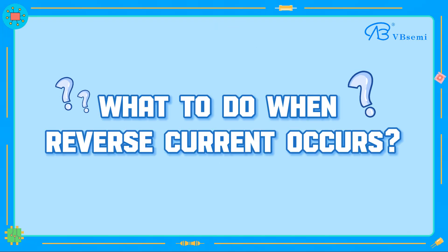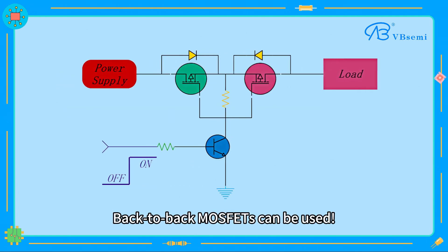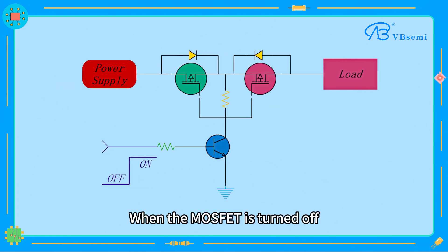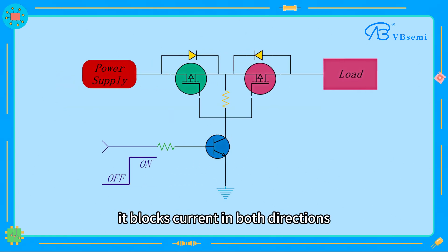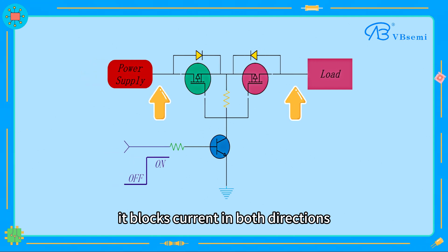What should you do when reverse current occurs? Back-to-back MOSFETs can be used. When the MOSFET is turned off, it blocks current in both directions.